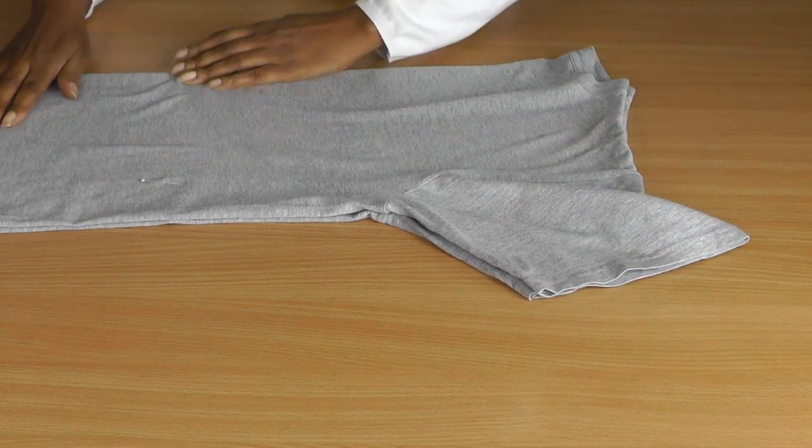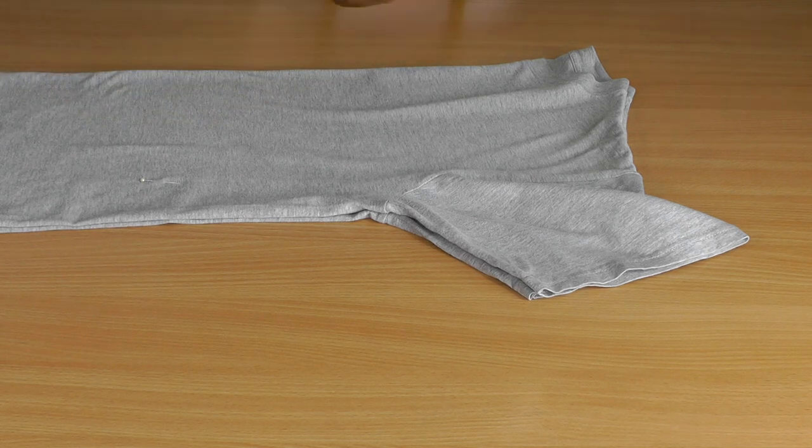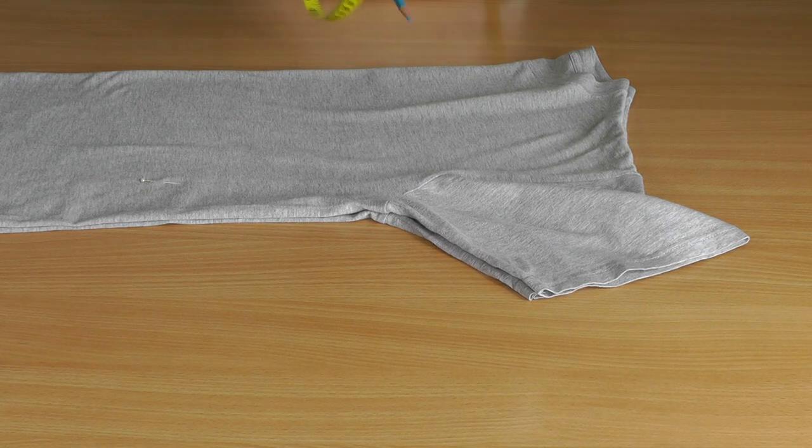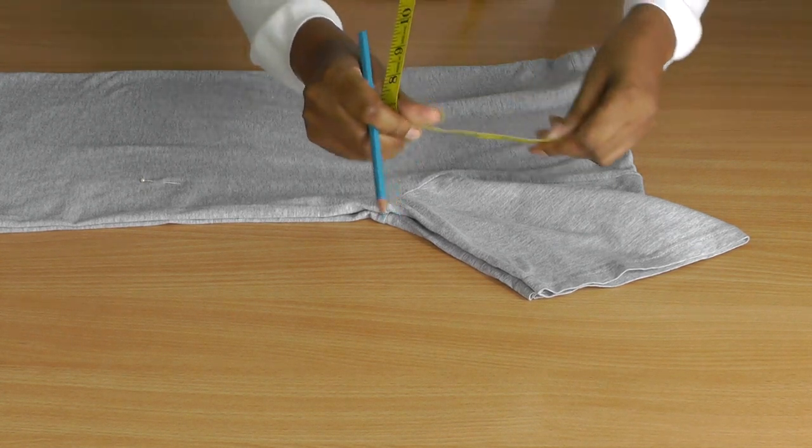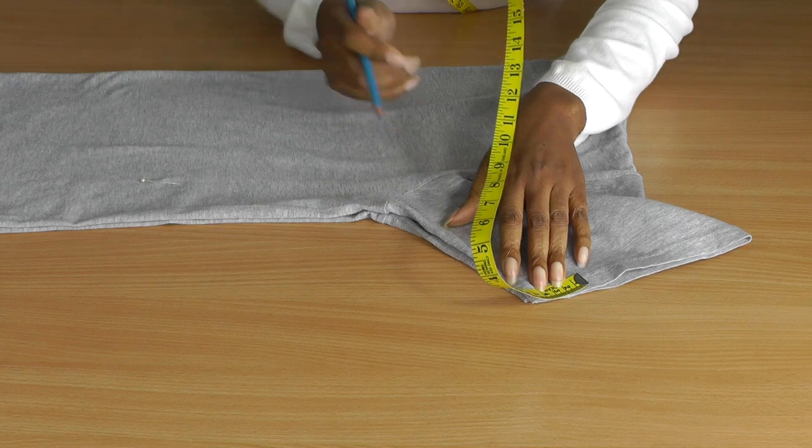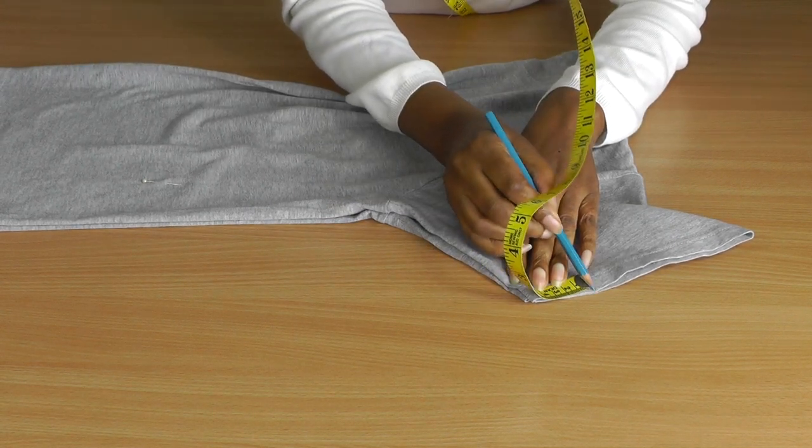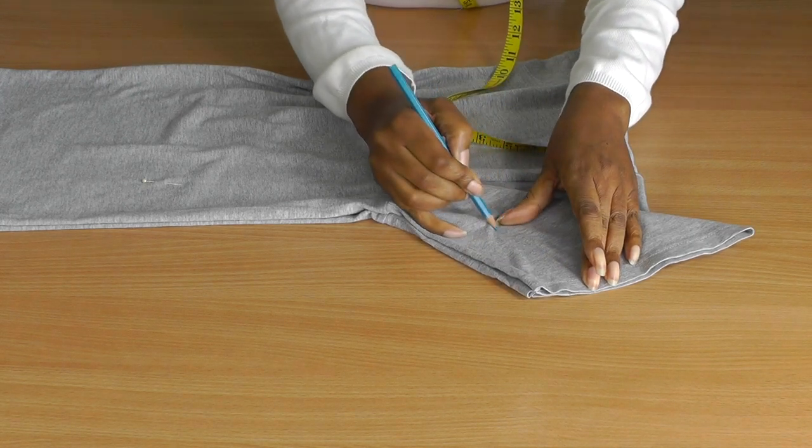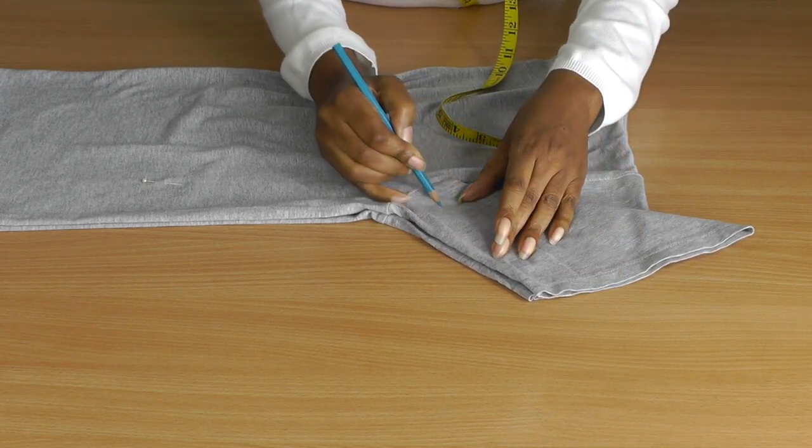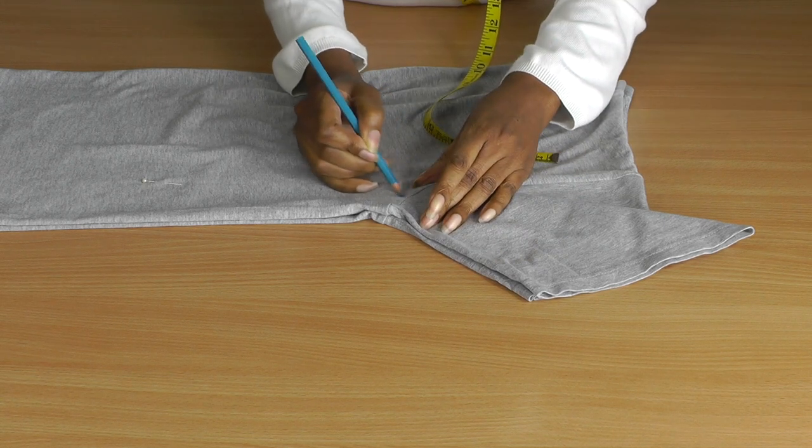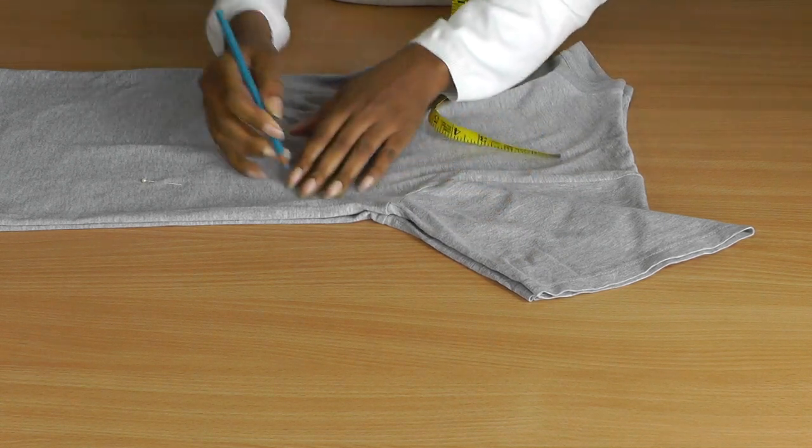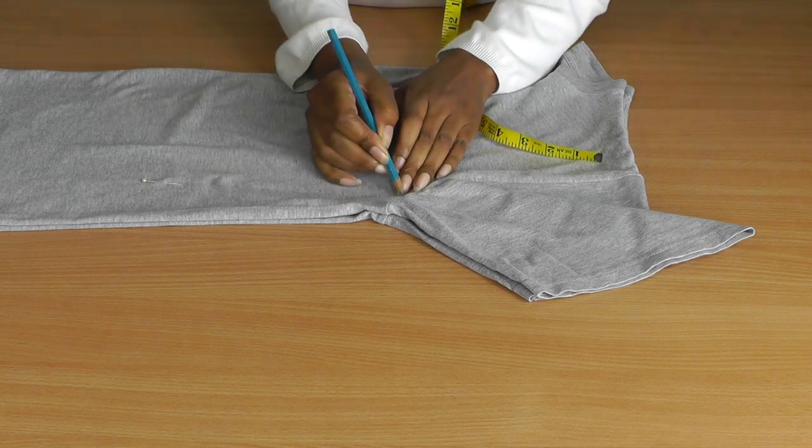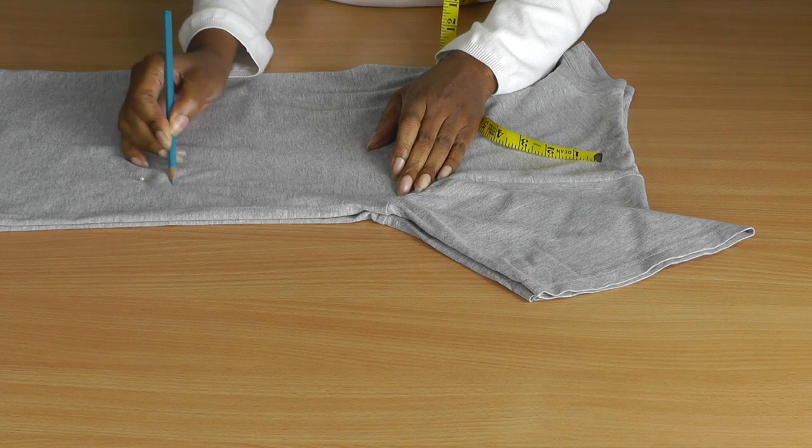So I am going to be marking about five centimeters which is roughly about two inches. So you don't need a new technique for this here. So from here, I'm going to put a marking that comes all the way through the body of the shirt.